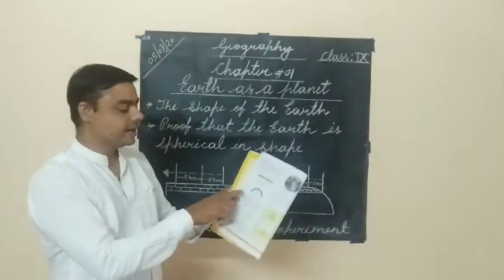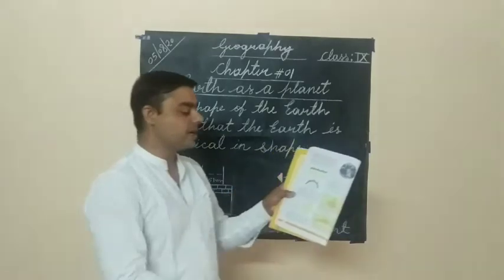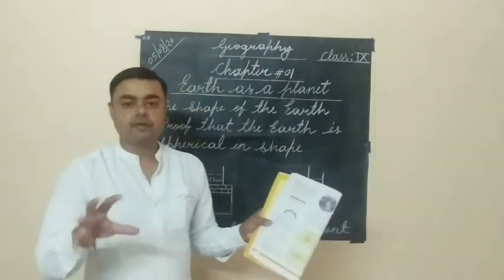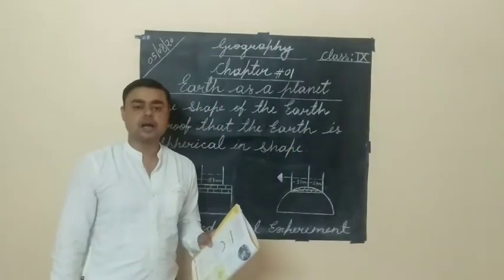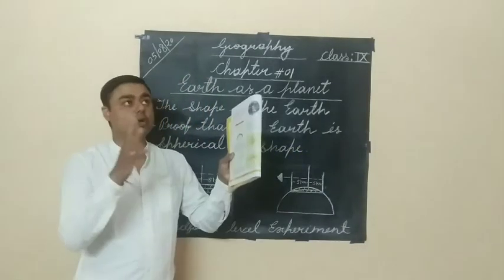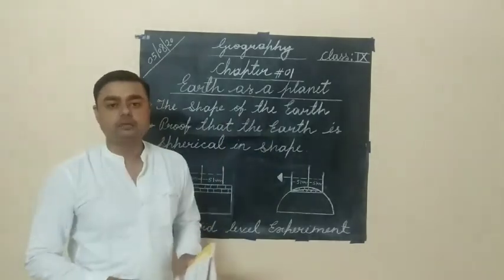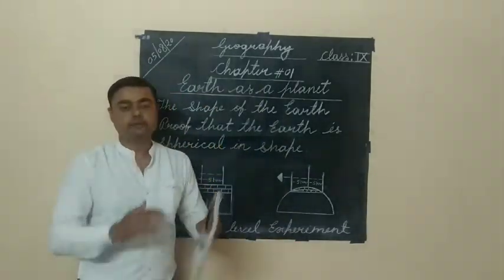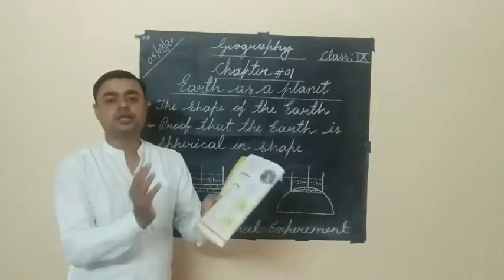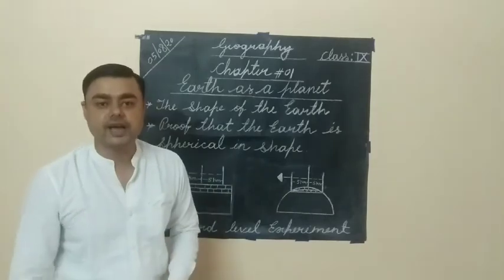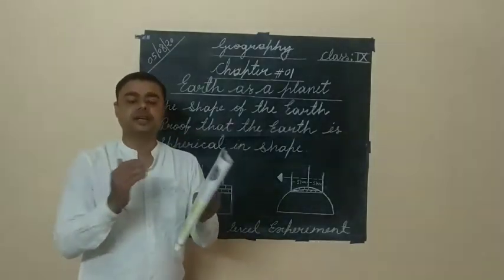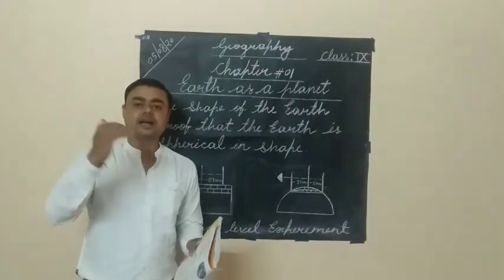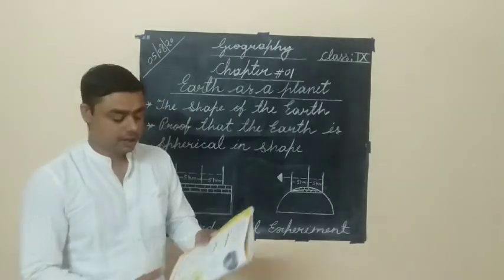The next example is the pole star. When we observe the pole star, it is always seen at a 90-degree angle. If our Earth were not in a spherical shape, we would not be able to see the pole star at a 90-degree angle.